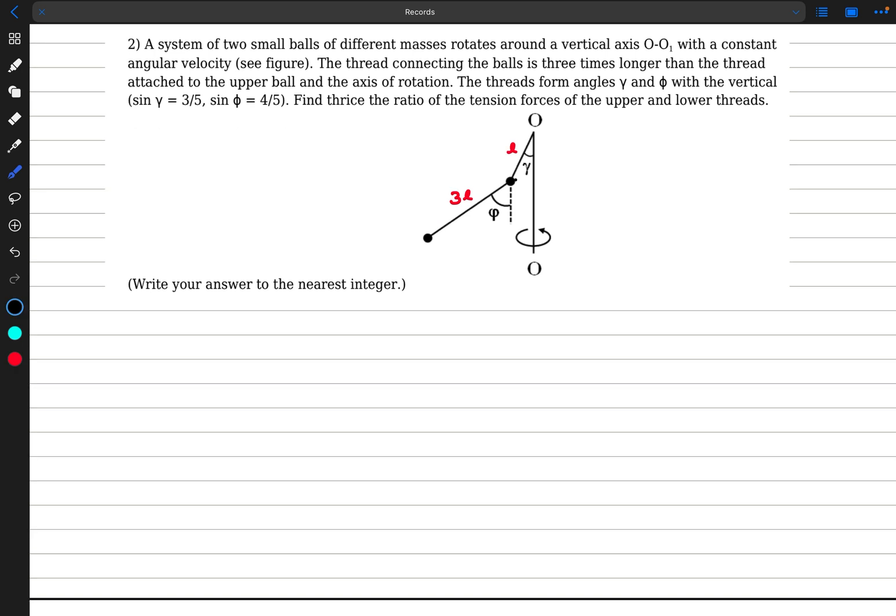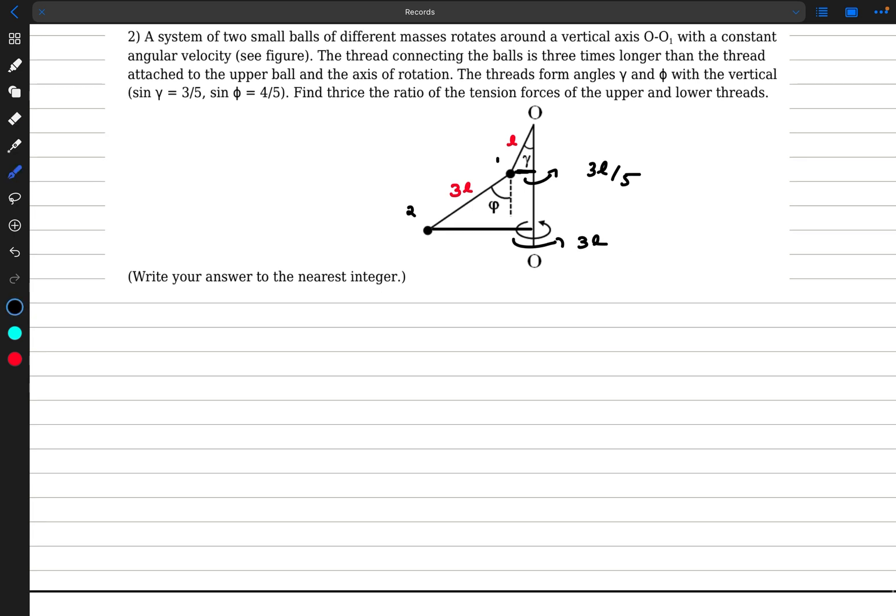So once again, if this length is 3L, this length would be L. In order for writing down the centrifugal forces, we would need the x distances. So let's just calculate them. So if this is ball one, this is ball two, this distance would be L sin gamma, which is 3L by phi. And this distance would be 3L by phi plus 3L sin phi, which is 12L by phi. So this is 15 by phi, which is 3L. So this distance would be 3L.